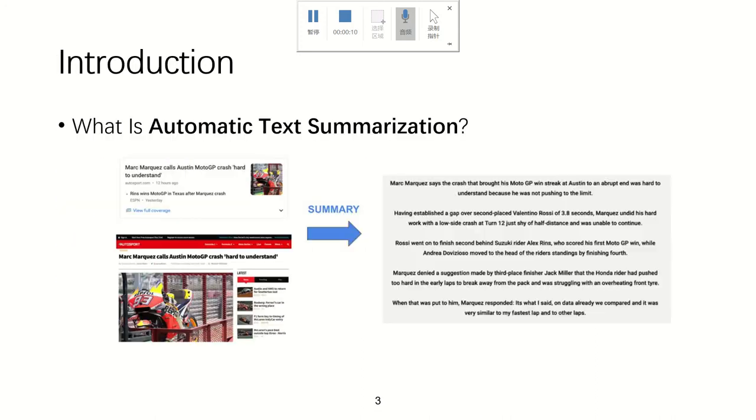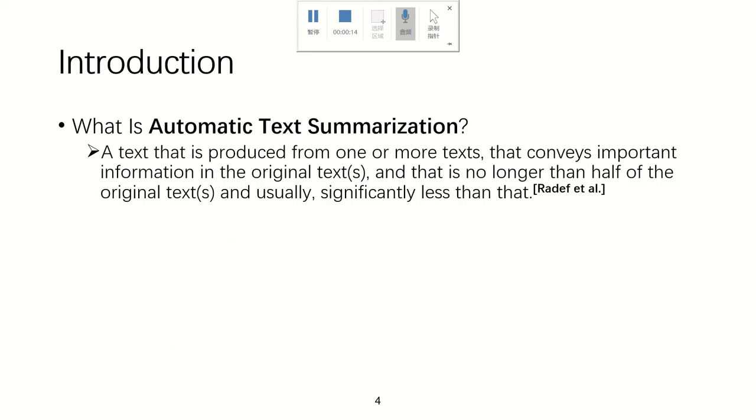In the beginning, I want to talk about what is text summarization. Automatic text summarization is using computer to produce a text from one or more texts that conveys important information in the original text and that is no longer than half of the original text and usually significantly less than that.